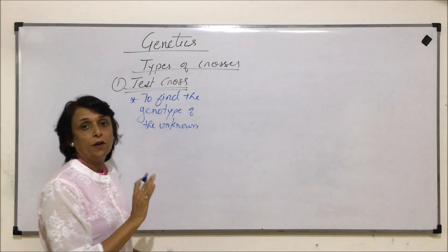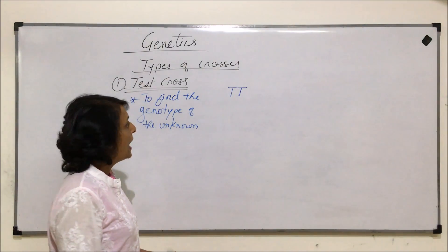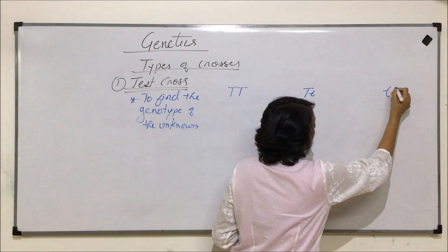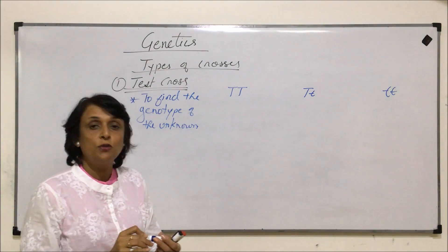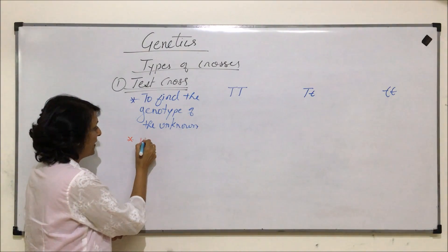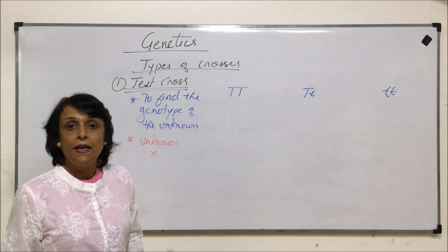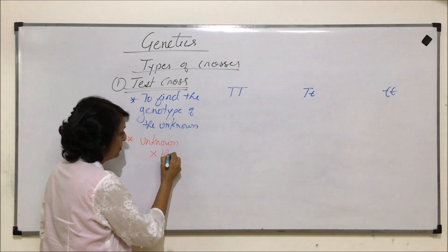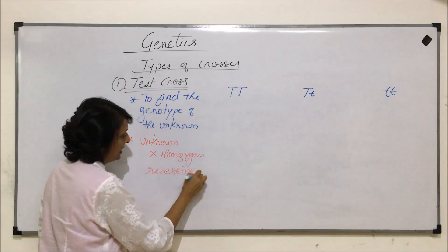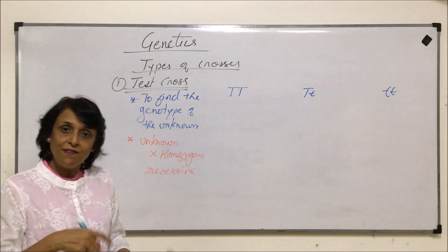There are three situations: our unknown could be homozygous dominant, our unknown could be heterozygous, or our unknown could be homozygous recessive. These are three possibilities in a test cross. We cross that unknown with one of the parents, and that parent has to be homozygous recessive. If we make such crosses we reach certain ratios, and then we backtrack.